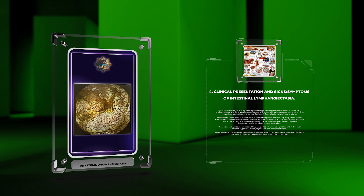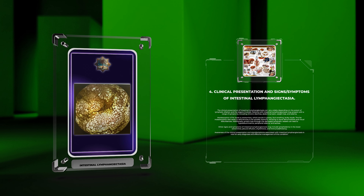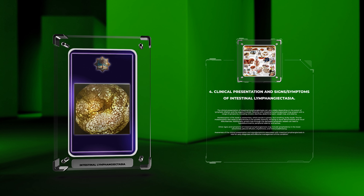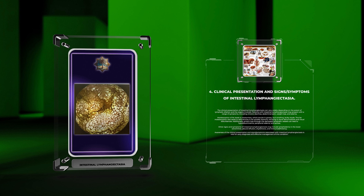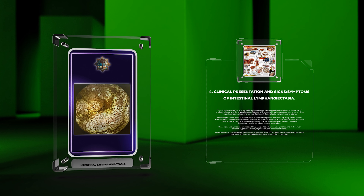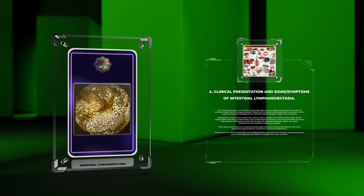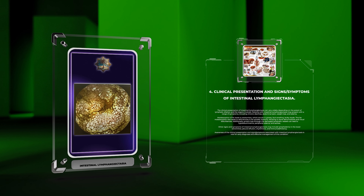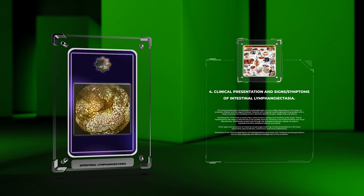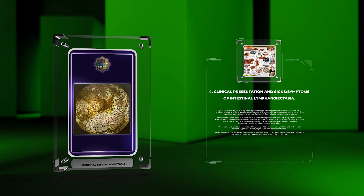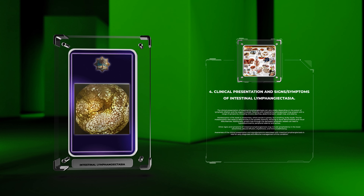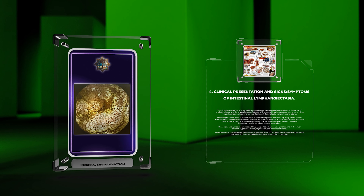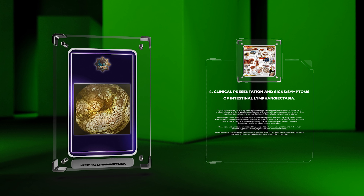Fat malabsorption also leads to deficiencies in fat-soluble vitamins, resulting in bone abnormalities and visual disturbances. Additionally, protein loss through the damaged lymphatic vessels can lead to hypoalbuminemia, peripheral edema, and ascites.